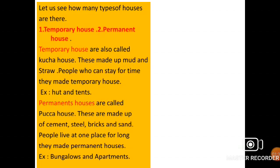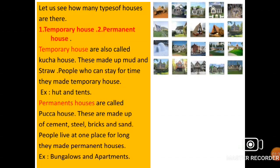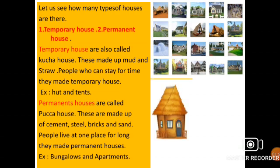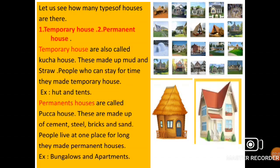Let's see how many types of houses there are. The first is a temporary house, and the second is a permanent house. Temporary houses are also called kaccha houses. Permanent houses are made of cement, steel, bricks, and sand. People who stay in one place for a long time make permanent houses — examples are bungalows and apartments.